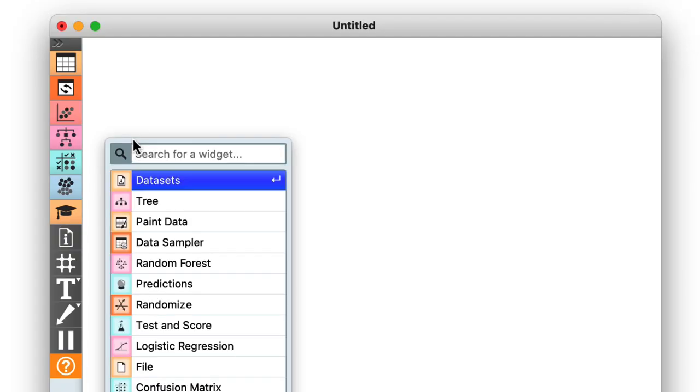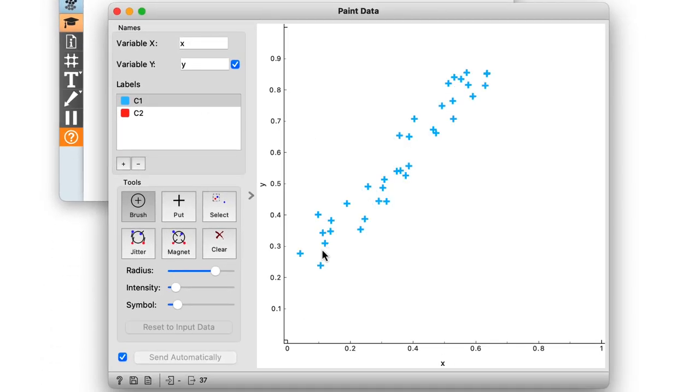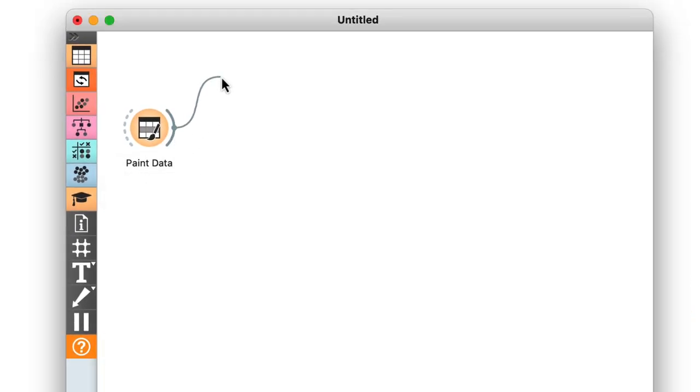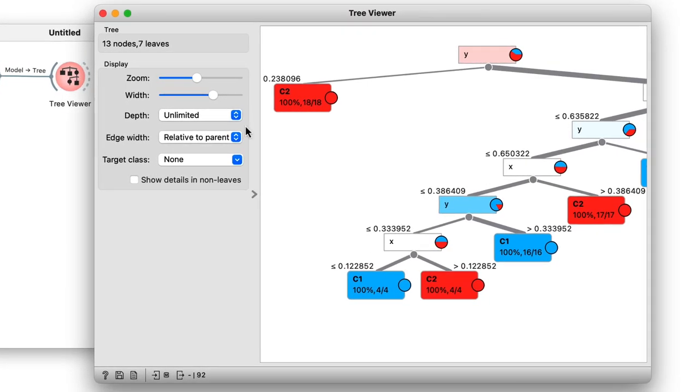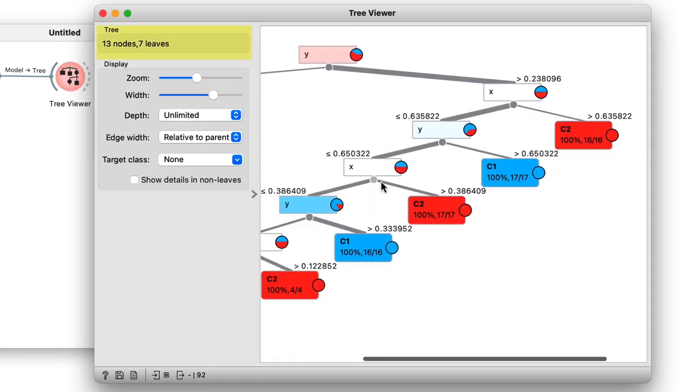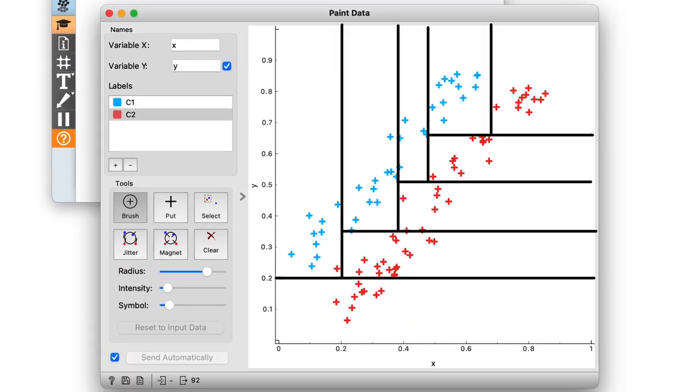The same classification trees we introduced in our previous videos can have problems with even the simplest datasets. Let me just sketch one out so you'll see what I mean. The tree constructed for this dataset is relatively large. Remember, trees can only cut a feature space vertically or horizontally. So for a dataset like this one, the decision boundary would end up looking like a staircase.